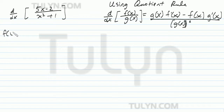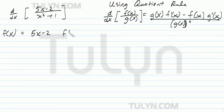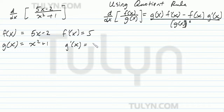So over here, your problem is the derivative of 5x minus 2 divided by x squared plus 1. Go ahead and find f of x — f of x is any function you choose. You can choose either top or bottom; I usually choose the top. Go ahead and find the derivative, and that's going to be 5. Go ahead and find g of x, which is equal to x squared plus 1. Go ahead and find g prime of x: the derivative of x squared is 2x, and the derivative of positive 1 is 0, so g prime of x is equal to 2x.